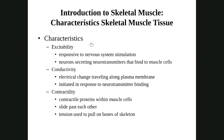Some characteristics make skeletal muscles unique. Excitability is a characteristic shared with the nervous system. Excitable means it can be stimulated by our nervous system — neurons can end at these cells and trigger them to make changes. Muscle cells are excitable; they can be triggered by the nervous system.